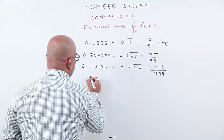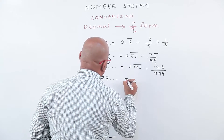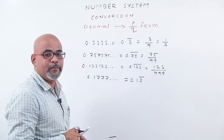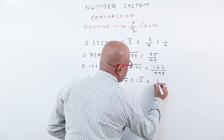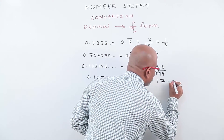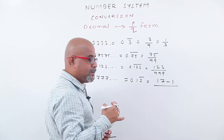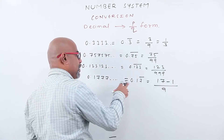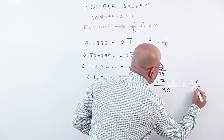Our next example: 0.17777 and so on. Writing in reduced form, only 7 is repeating. Now let us observe the method to write this. First write 17 as it is. The non-recurring number here is 1, therefore we subtract 1 from 17. The non-recurring part is always subtracted from this number. Since one number is recurring, we write 9. And since the non-recurring part is one single digit, we write one zero. So 16 upon 90 is the answer.